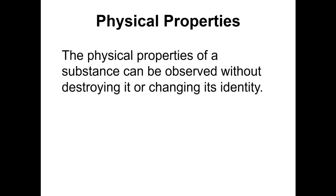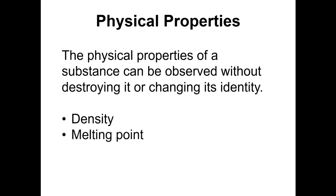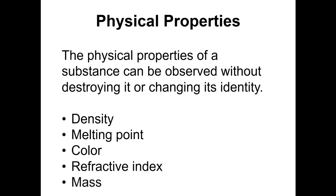Physical properties are properties that can be observed without destroying the substance or changing its identity — the answer to the big question is no. For example, density — as we're doing in lab this week — we can measure without changing its identity. We can determine the melting point, identify the color, see the refractive index. All of these can be measured without changing the identity of the substance, including mass, which is an extensive property.